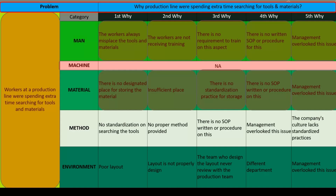Under Method — First why: why are workers spending extra time searching? No standardization on searching for tools. Second why: why no standardization? No proper method provided. Third why: why no proper method? No written SOP or procedure. Fourth why: why no SOP? Management overlooked this issue. Fifth why: why did management overlook? Because the company's culture lacks standardized practices.